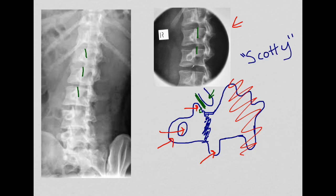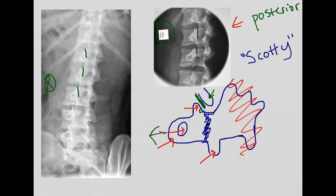Scotty gives you all sorts of good information. Scotty's nose is pointing towards the side that we're looking at. Remember that we are doing posterior obliques, which means we're looking at the same side. Because this is marked with the right, Scotty is facing towards the right — so we know we're looking at right-sided pars interarticularis and right-sided structures. Look for Scotty's nose and look at what side he's pointing to. If this was an L, we would be looking at left-sided structures.